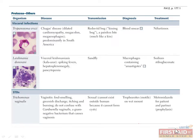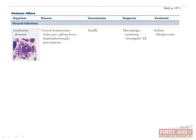Protozoa causing visceral infections include Trypanosoma cruzi and Leishmania donovani. Trypanosoma cruzi is endemic to South America and causes Chagas disease, characterized by dilated cardiomyopathy, megacolon, and megaesophagus — just think that it makes organs bigger in size, like Tom Cruise is bigger than life. Trypanosoma cruzi is transmitted by the reduviid bug, which has a painless bite — in contrast to Trypanosoma brucei, which is transmitted by the tsetse fly with a painful bite. Treat Trypanosoma cruzi with Nifurtimox.